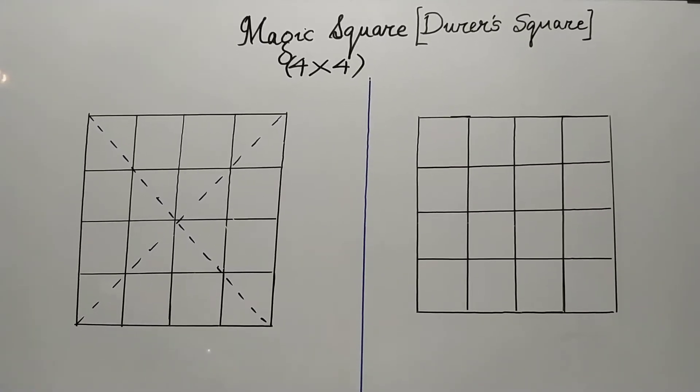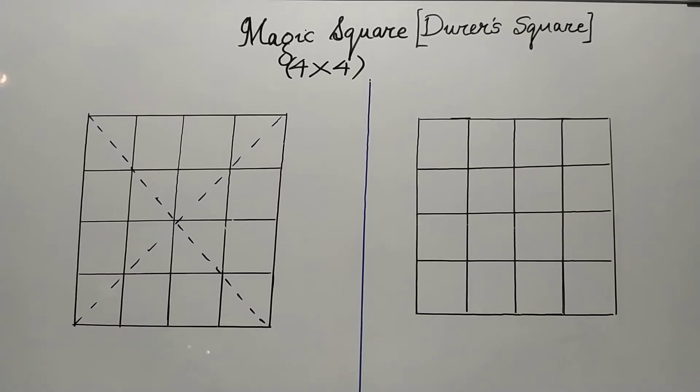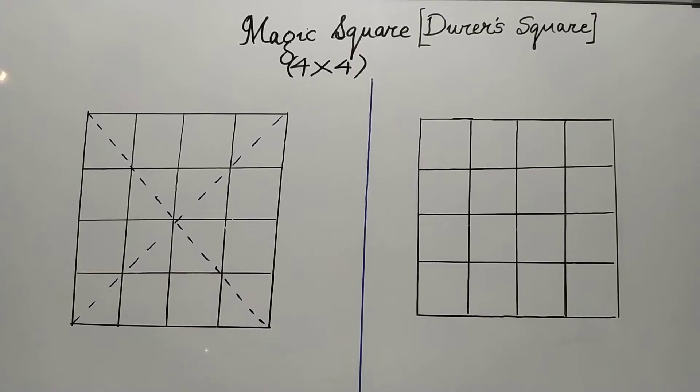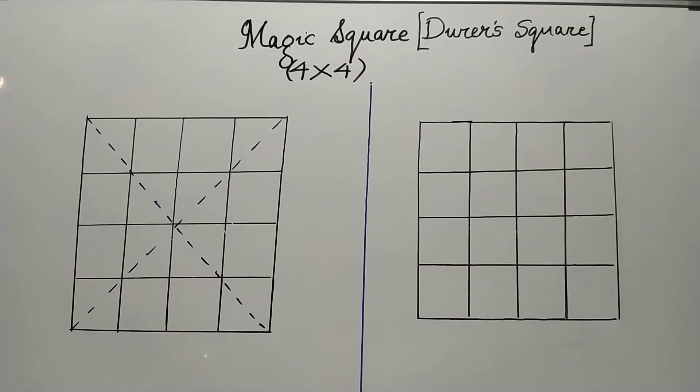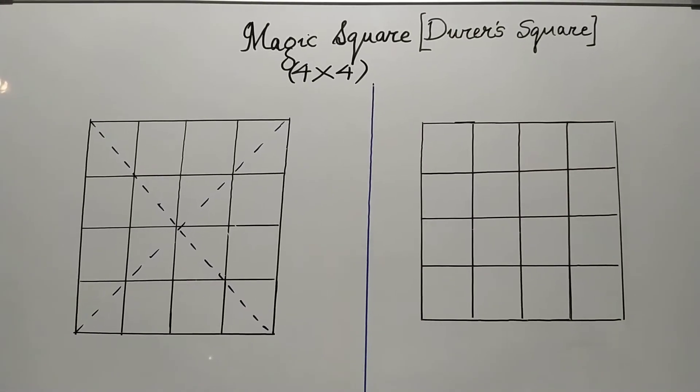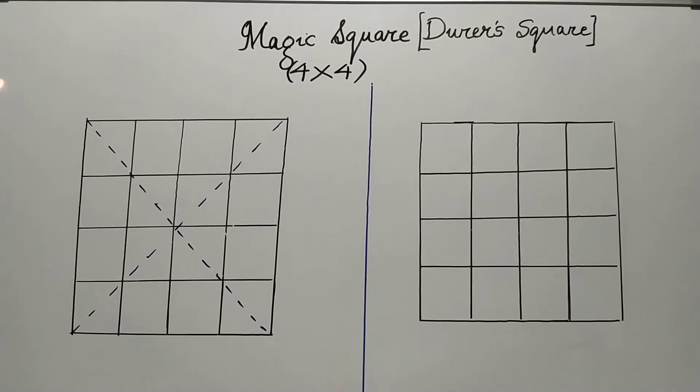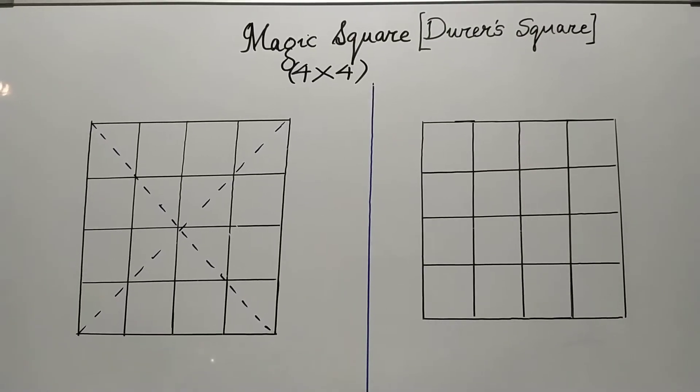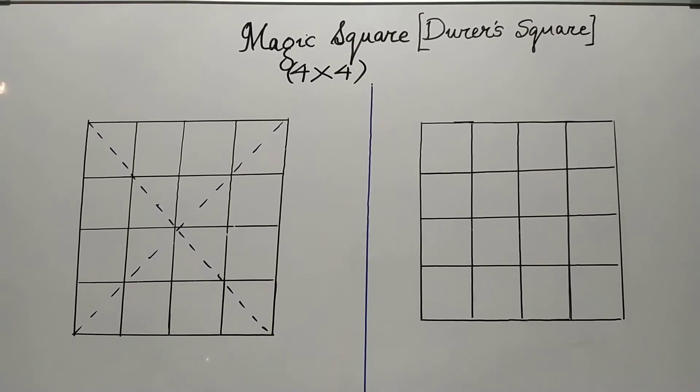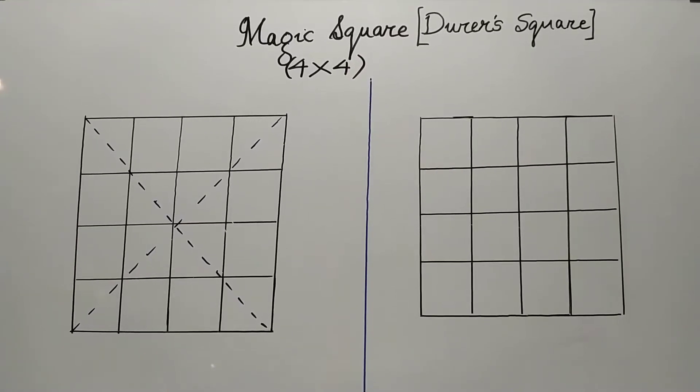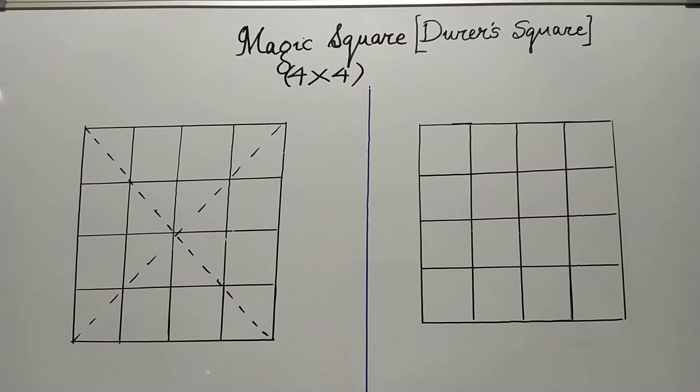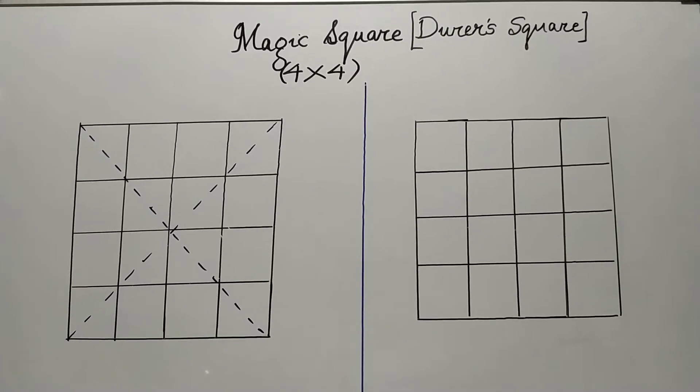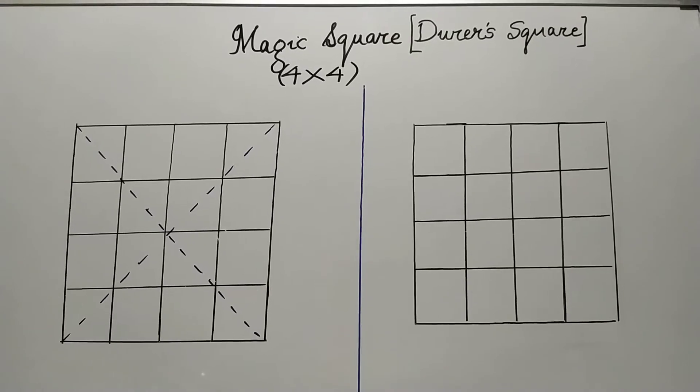In the previous episode, you had learned constructing magic squares which had odd numbers of grids. In today's episode, we will learn how to construct a 4x4 magic square, which is also called Dürer's Square.